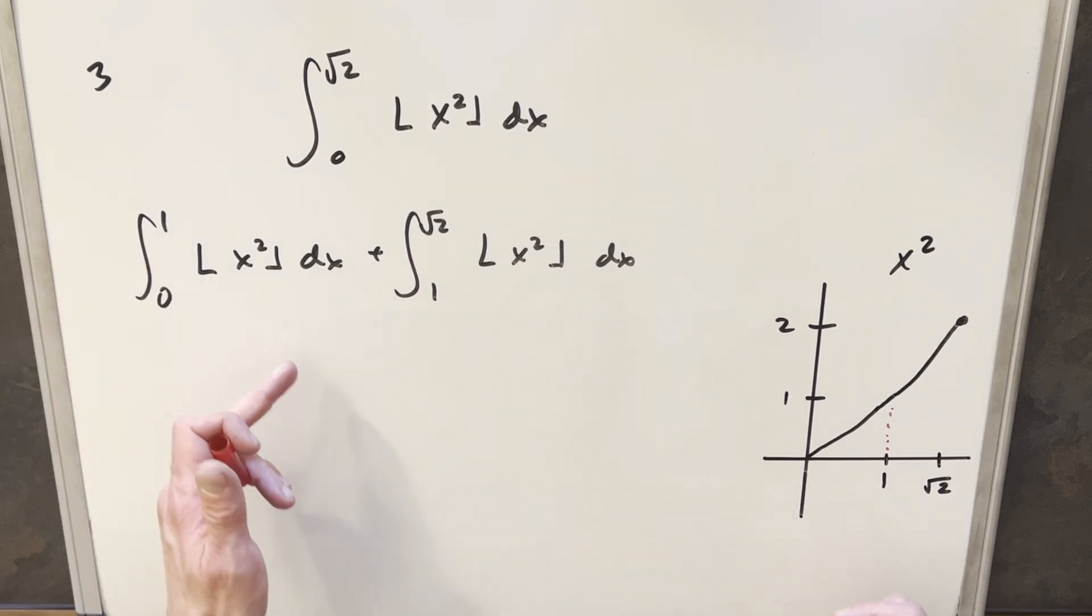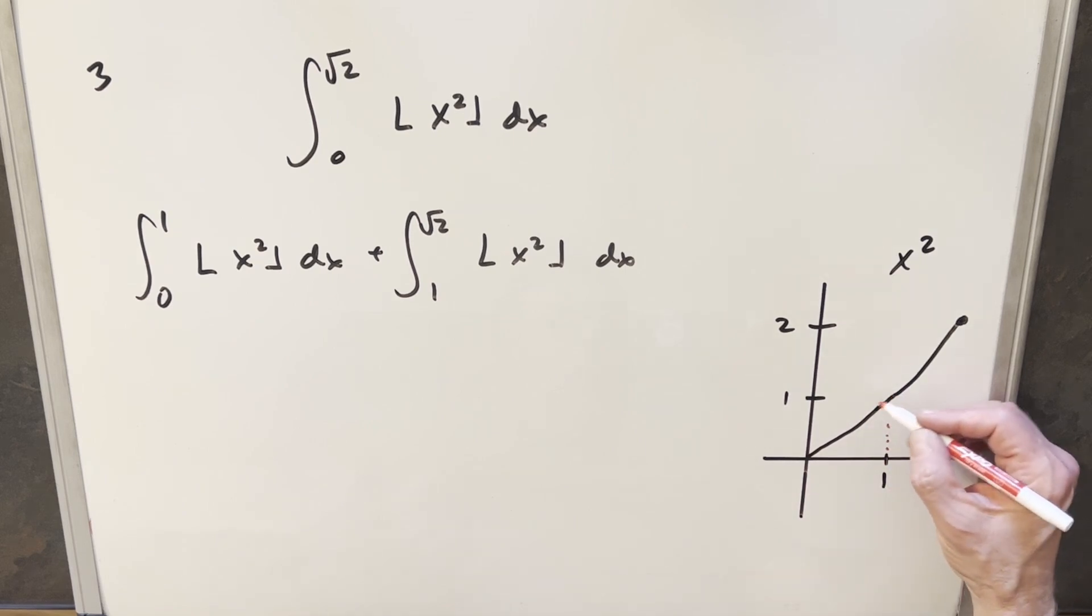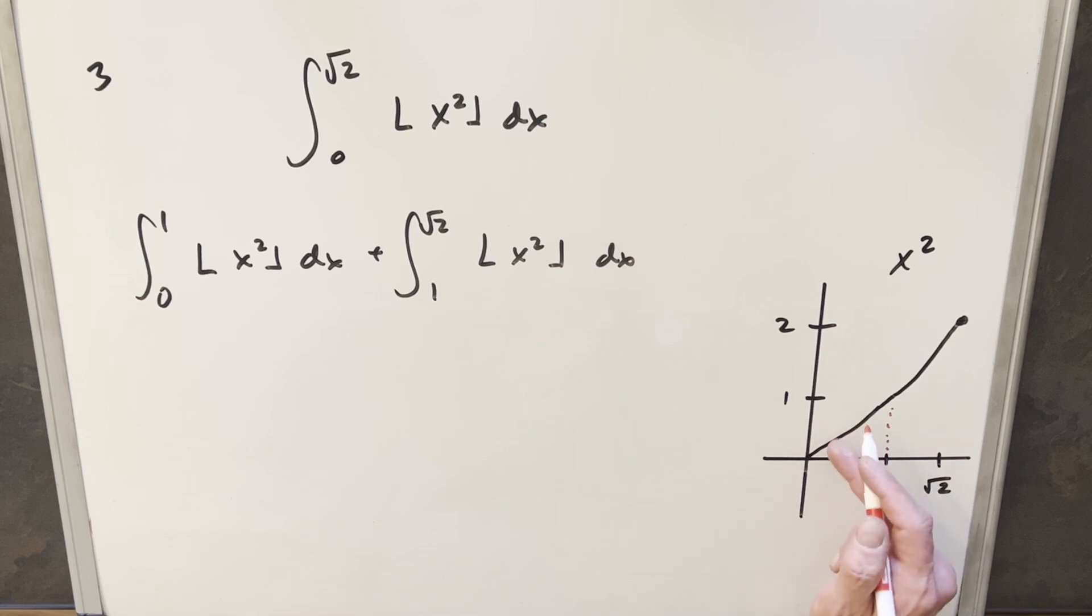So from 0 to 1, if we look at what's happening here, notice that even at our endpoint, we're only getting up to 1, but we don't care about the endpoint. So what's going to happen is everything here from 0 to 1, all of this is going to be rounded down to 0. Technically, this would be like an open circle here because at 1, the floor would evaluate us to 1.